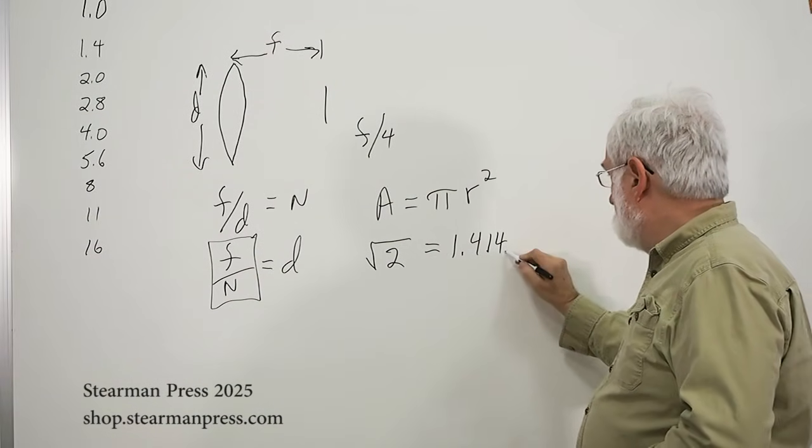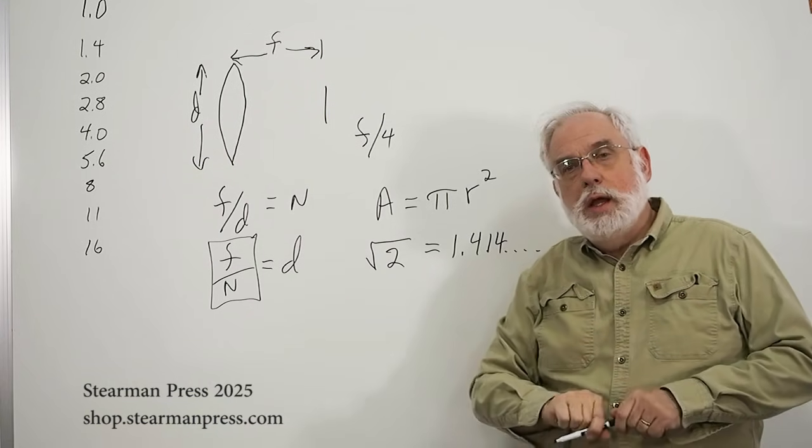It's irrational, because the square root of two goes on forever. Trivial point.